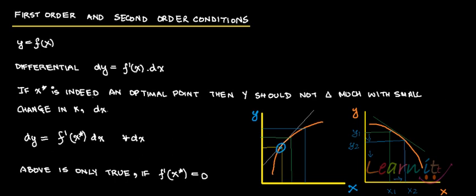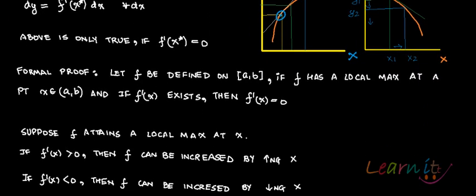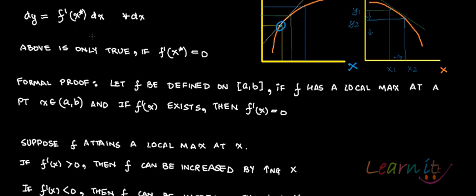What I am trying to say is that if this extreme point x star is indeed the optimal point, then y should not change much with a small change in x. The small change in x is given by dx. So dy equals f'(x*) dx for all x. This can only be true if f'(x*) is equal to zero.